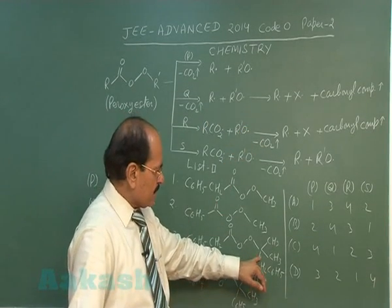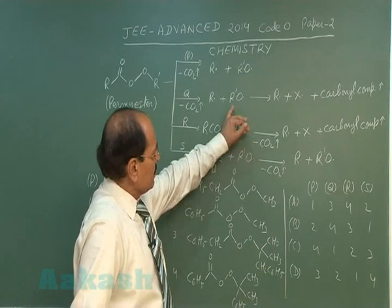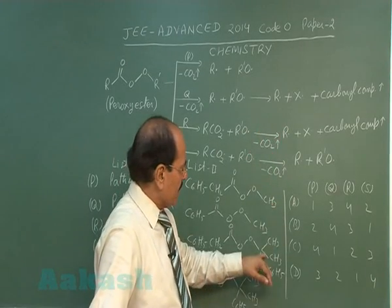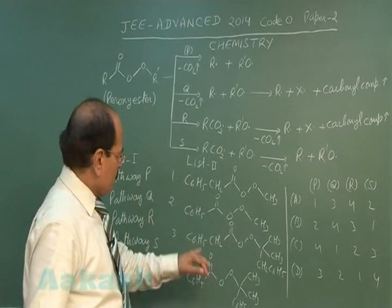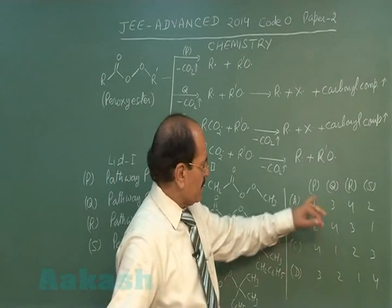This is a tertiary alkoxy radical. The tertiary alkoxy radical undergoes further cleavage, giving rise to a 3-degree alkyl radical. So pathway Q matches with the third option in list two.